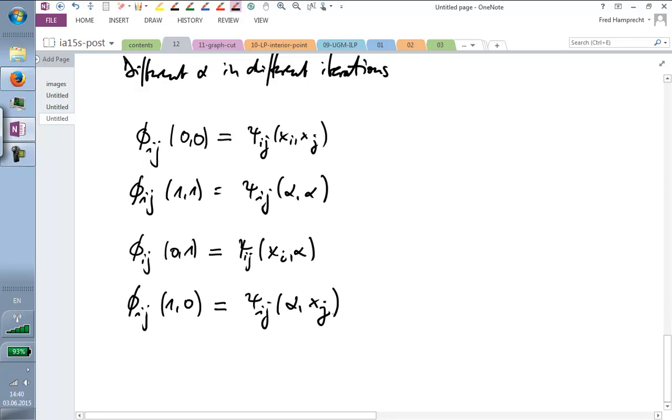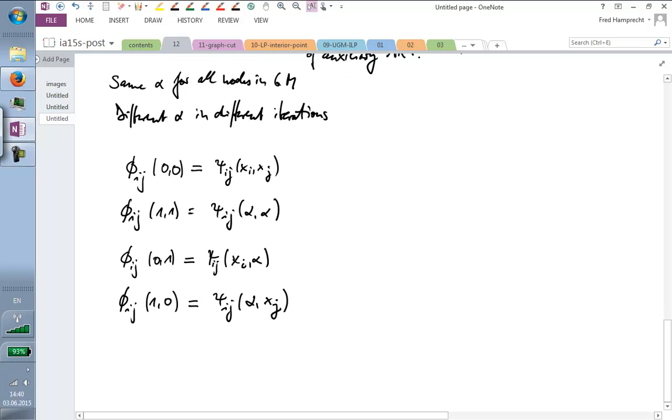Yeah? The alpha that you are proposing, is that different for every pixel? No. No. We use the same alpha for every pixel but a different alpha in every iteration. Okay. So, you ask if every pixel wants to do that? Yes. Precisely. Yeah. So, same alpha for all the nodes in the graphical model and a different alpha in different iterations. And often it is just randomly selected, the next alpha that we want to use.